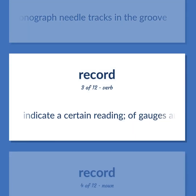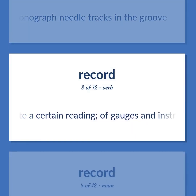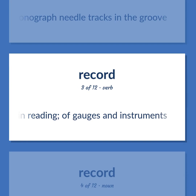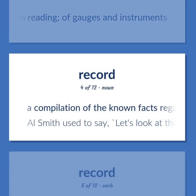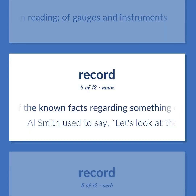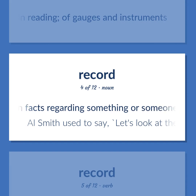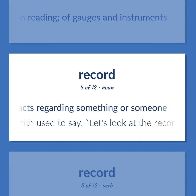Record: To indicate a certain reading of gauges and instruments. A compilation of the known facts regarding something or someone. As Al Smith used to say: let's look at the record.